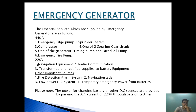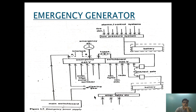In the 220V category: navigational equipment, radio communication, and transformer and rectifier supply to battery equipment. Other important sources include battery equipment, fire detection and alarm system, navigational aids, low power DC system, and temporary power for battery. The power for charging batteries or other DC sources is provided by passing 220V AC through a set of rectifiers.